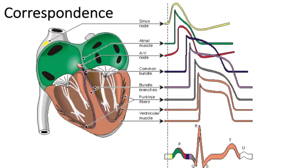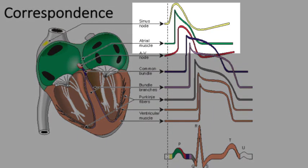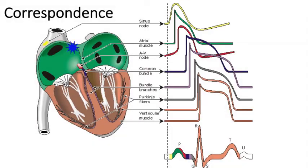Now let's talk about the atria specifically. Atrial conduction cells are structured similarly to the cells in the SA node, and as a result their intrinsic firing rate is close to that of the SA. These cells can be easily irritated, and when they are, the automaticity function kicks in early, and they can produce extra and early beats or even take over the pacemaker function of the heart.